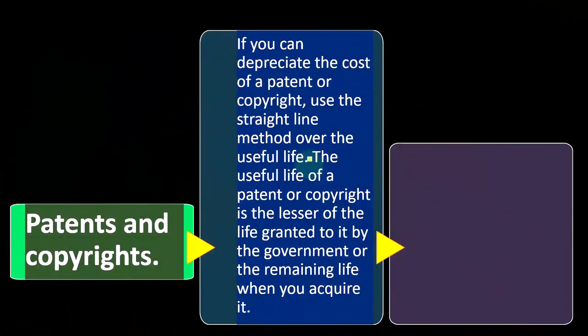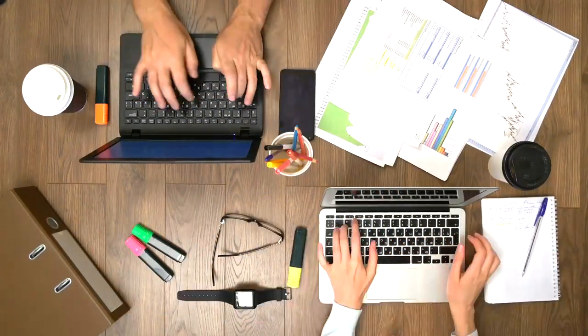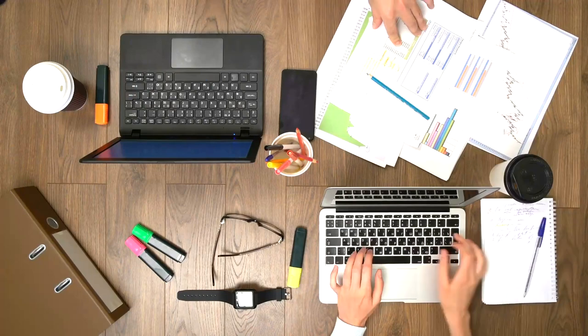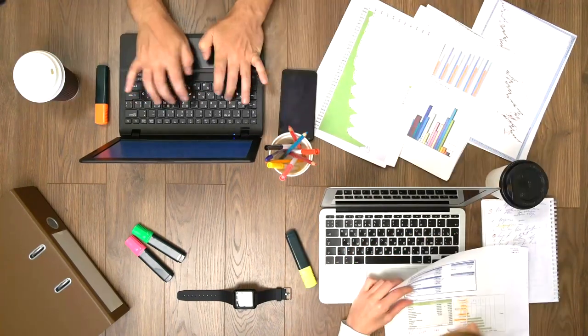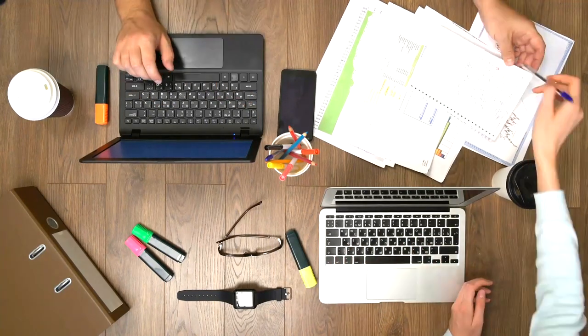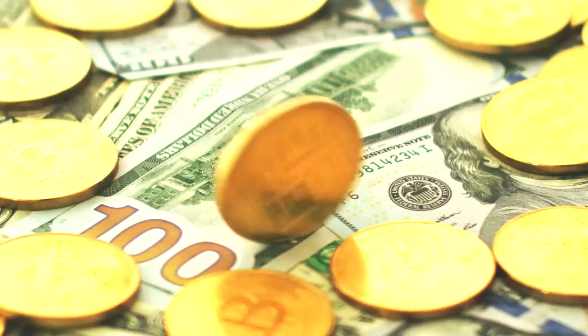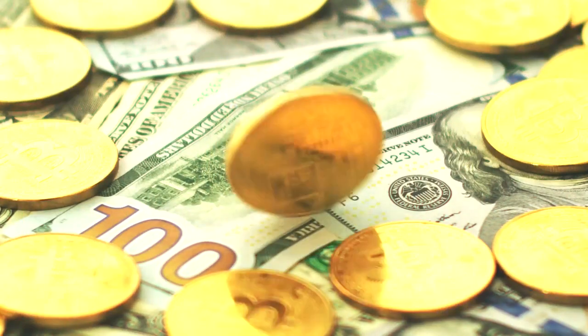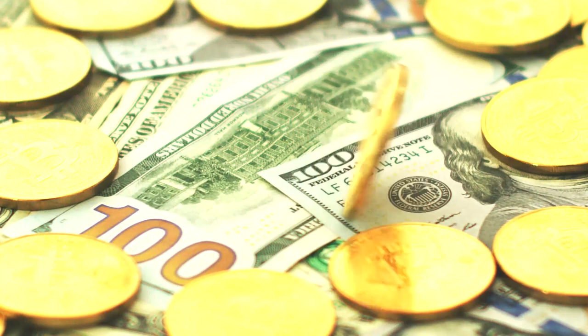Conceptually, we would think: what is the useful life of my patent or copyright? A patent or copyright is a type of intangible asset granted through law — it's a legal thing. That's why we have it; we've got legal restrictions in place. They're not physical, they're not tangible things, but they have value.